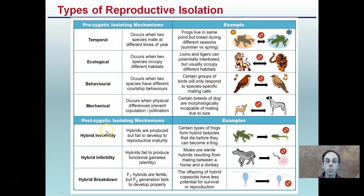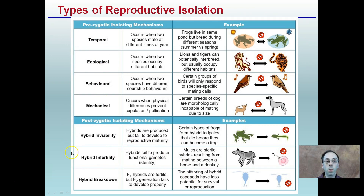Postzygotic isolating mechanisms include hybrid inviability, where hybrids are produced but fail to develop to reproductive maturity. There's also hybrid infertility, where hybrids fail to produce functional gametes and are sterile — mules are an example. And hybrid breakdown, where F1 hybrids are fertile but F2 fails to develop properly. These are more specific examples of the general pre- and postzygotic isolating mechanisms.